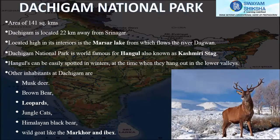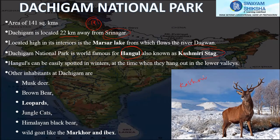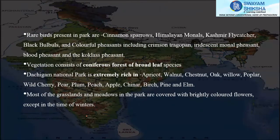Dachigam National Park covers an area of just 141 square kilometers and is located 22 kilometers from Srinagar. It has Marsar Lake within it and is famous for the Hangul, which is the Kashmir Stag. Other inhabitants include musk deer, brown bear, leopards, Himalayan black bears, and rare birds such as cinnamon sparrows and Himalayan Monals.